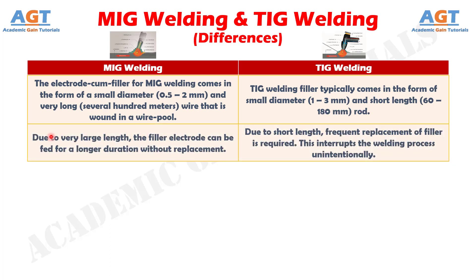Number 6: In MIG welding, due to very large length, the filler electrode can be fed for a longer duration without replacement, whereas in TIG welding, due to short length, frequent replacement of filler is required.